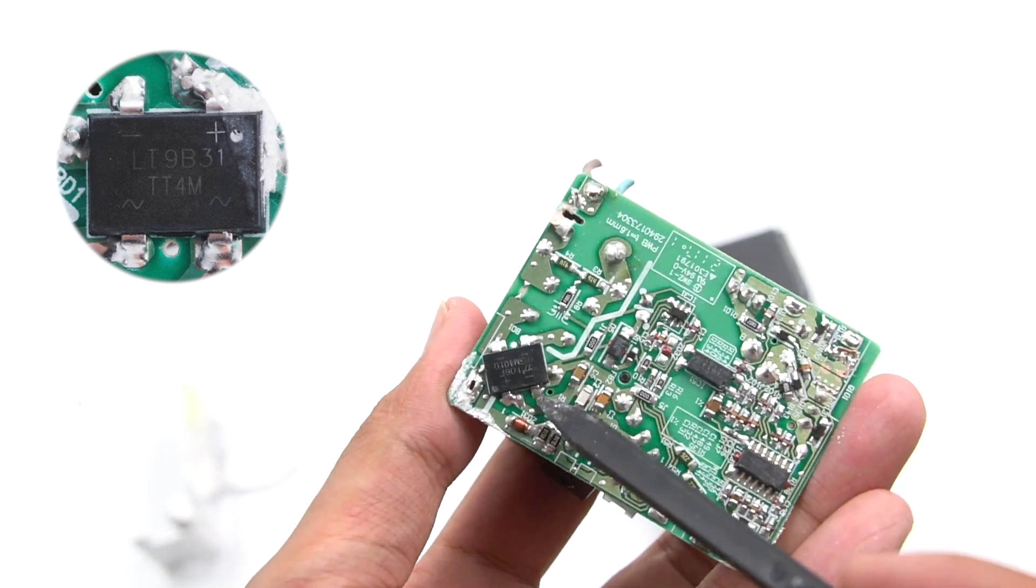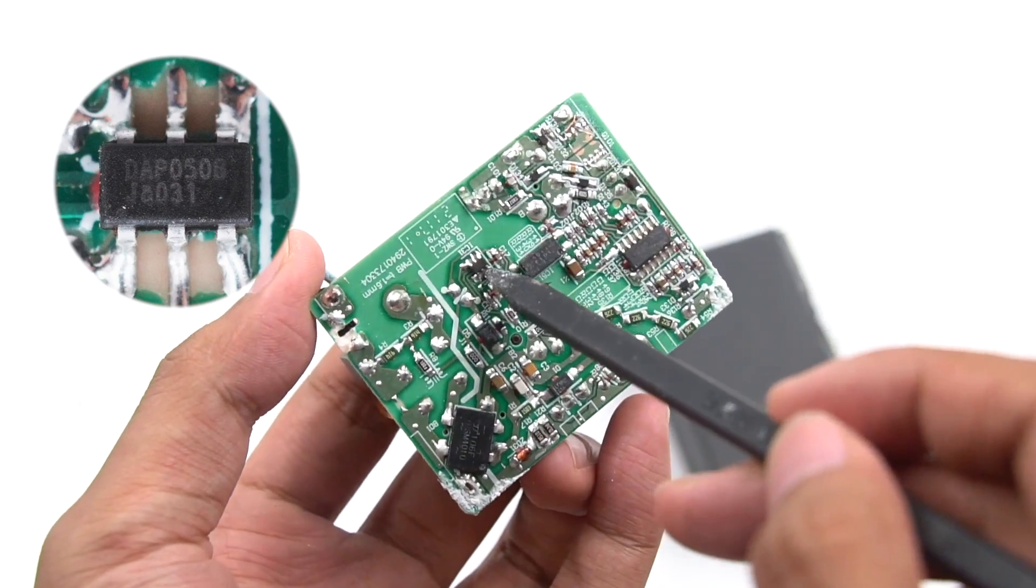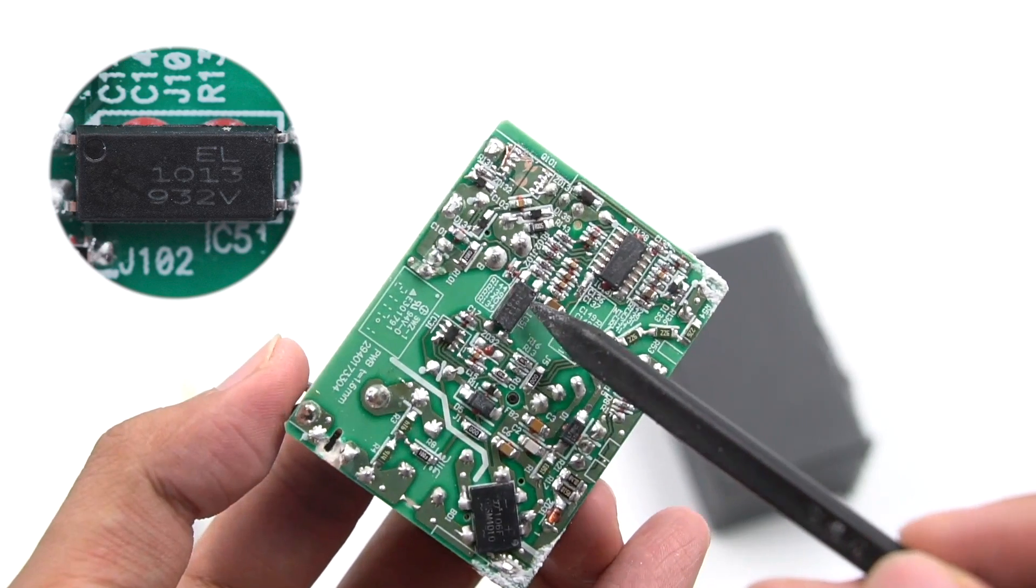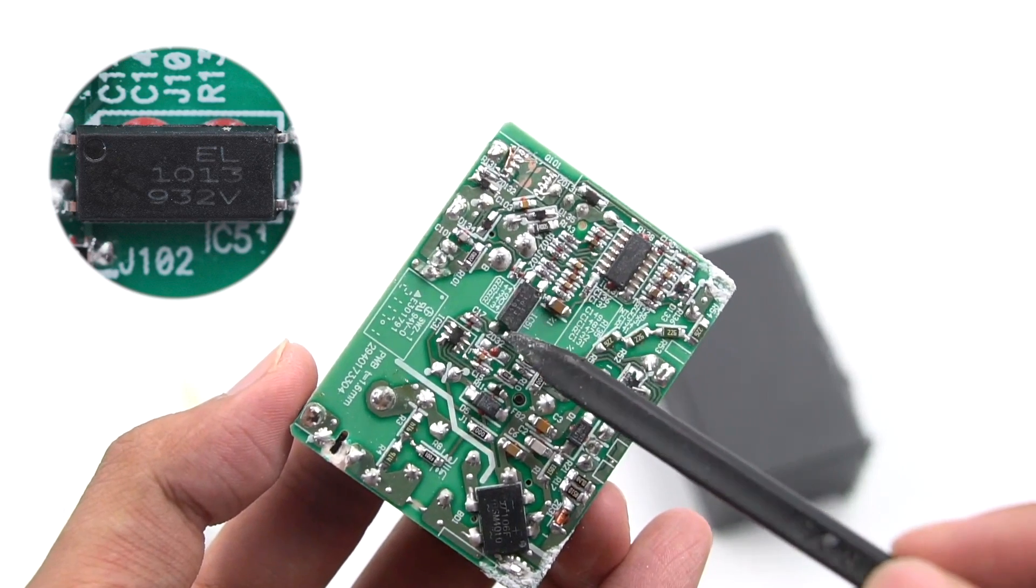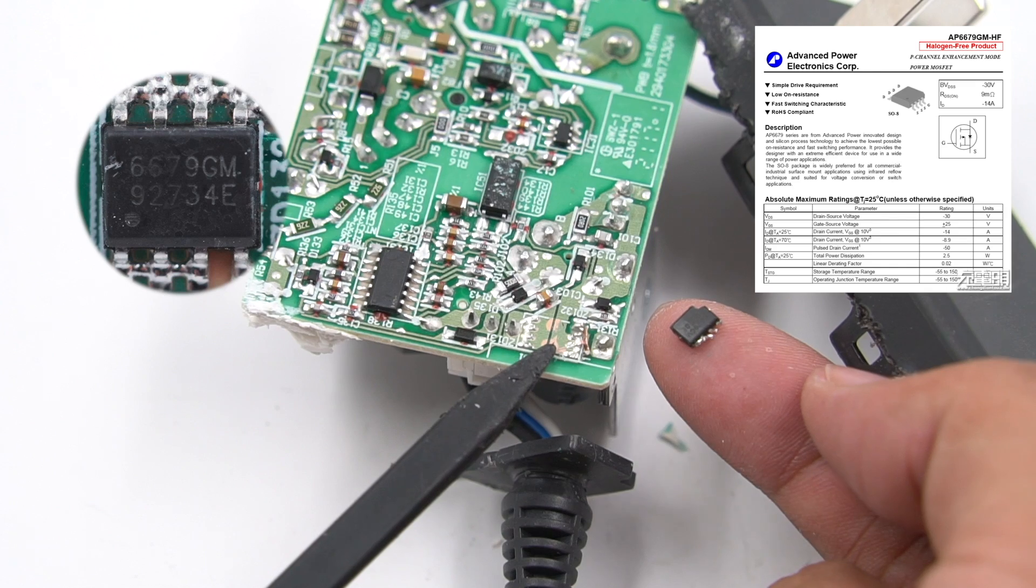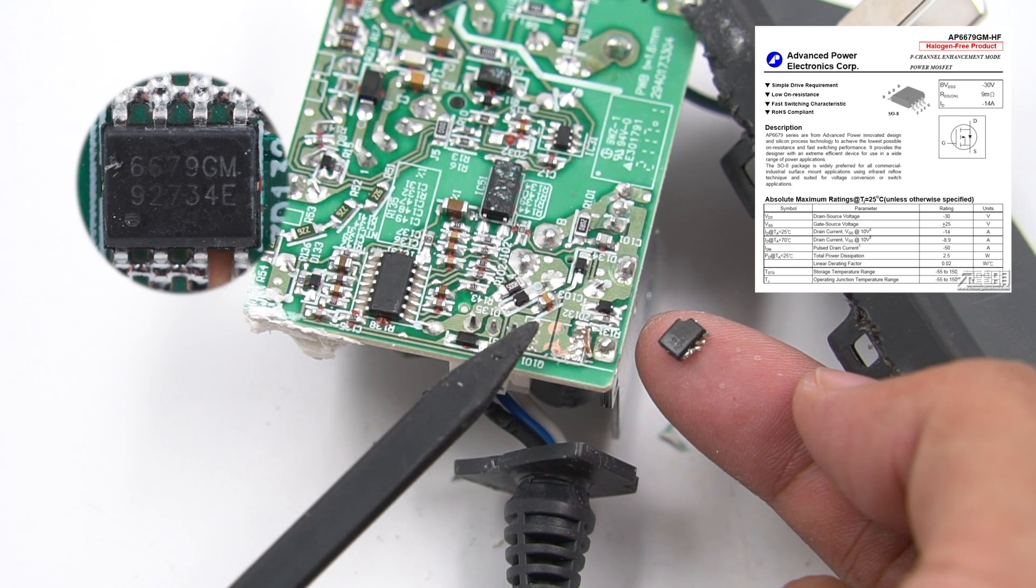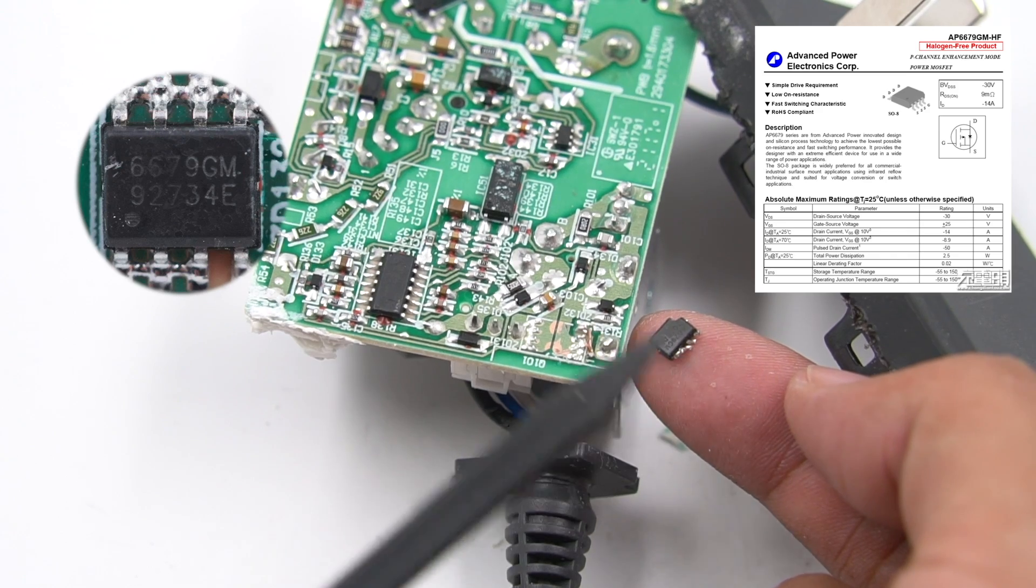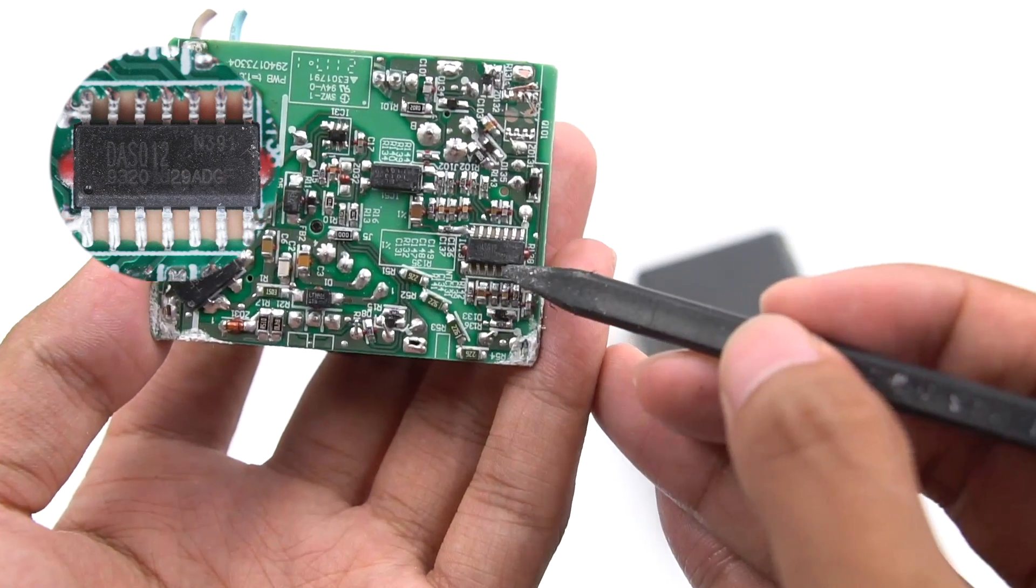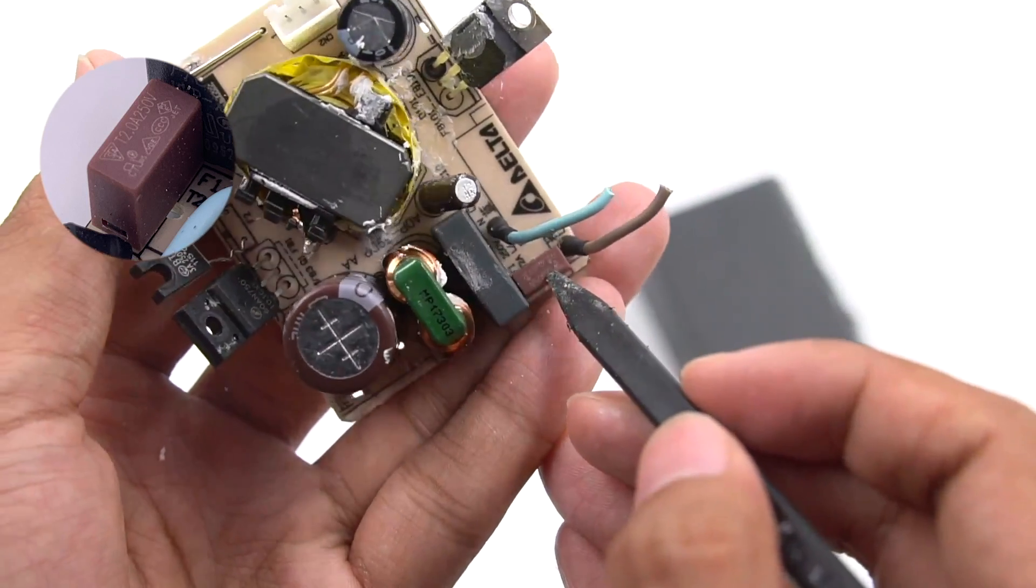There is an input rectifier bridge from Lite-On TT4M. And a PWM controller IC marked with DAP0500 and customized by Delta. An optocoupler comes from Everlight EL1013 and is placed between primary and secondary circuits for voltage feedback. The pulled off one is the VBUS switch tube of output. Model is APEC AP6679GM. Withstand voltage is 30V. This is a USB PD protocol chip marked with DAS012. An input delay fuse is in here. The specification is 2A 250V.